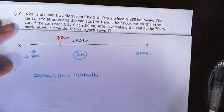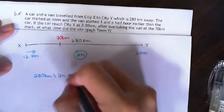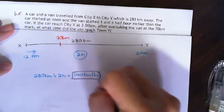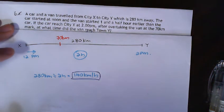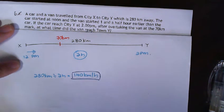So the speed of the car is 140 km per hour. Now at 12 noon, the car started up. We are not sure how far the van has traveled, but what we do know is